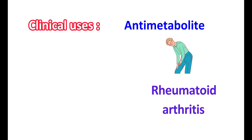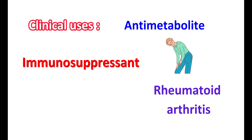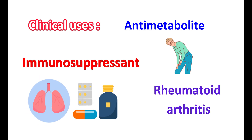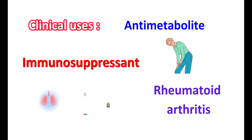First, let us see what are the clinical uses of azathioprine. Azathioprine is classified as an anti-metabolite — specifically one of the purine anti-metabolites. It has several clinical indications. One of its clinical uses is in the treatment of rheumatoid arthritis. This medication belongs to the group of drugs called disease-modifying anti-rheumatic drugs (DMARDs). It is also used as an immunosuppressant, and therefore it can be used to prevent organ transplant rejection. Azathioprine can also be used for the treatment of inflammatory bowel disease like Crohn's disease and ulcerative colitis.